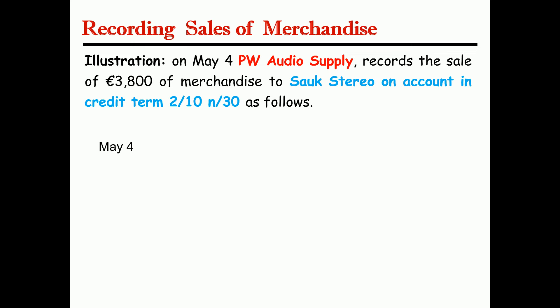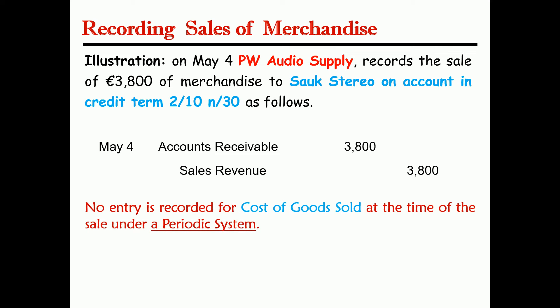Assume that PW is a company selling merchandise to a store on a cashable account with a credit term of 2/10, n/30. PW records account receivable and sales. But no entry records the cost of purchase at the time of sale under the periodic system. In the perpetual inventory system, at the time of sale, PW records cost of goods sold debit and inventory credit.